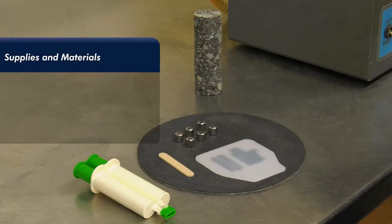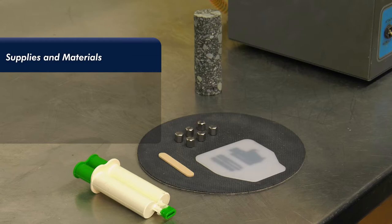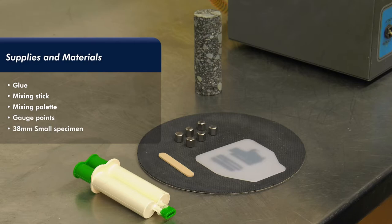Supplies and materials are shown here and include glue, mixing stick, mixing palette, gauge points, and 38 millimeter diameter by 110 millimeter tall specimen.